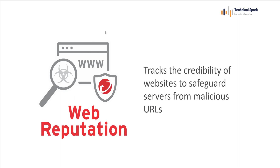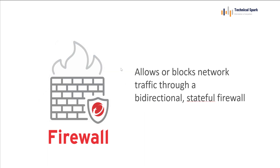Next is web reputation. Whenever you browse any website, it tracks the credibility of the website to safeguard servers from malicious URLs. If Trend Micro web reputation finds you are visiting a malicious website, it has the capability to block that website immediately. Next is firewall — you can block malicious traffic or allow and block network traffic through a bidirectional stateful firewall, viewing all traffic coming to or going out from your server, and based on your requirement you can block or allow that traffic.